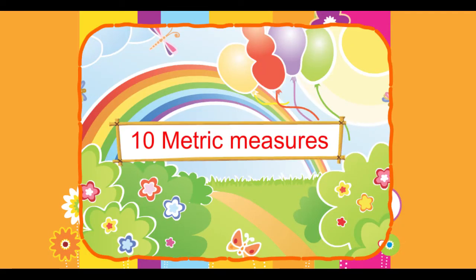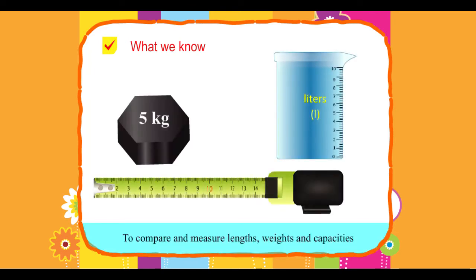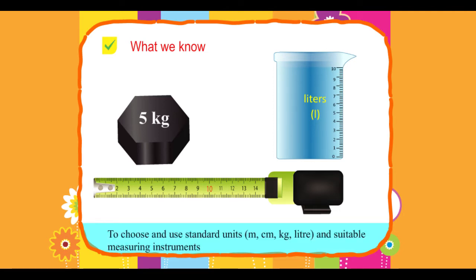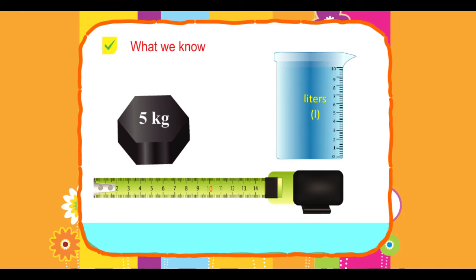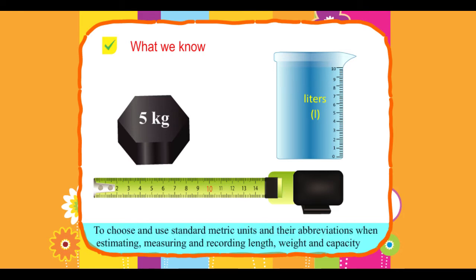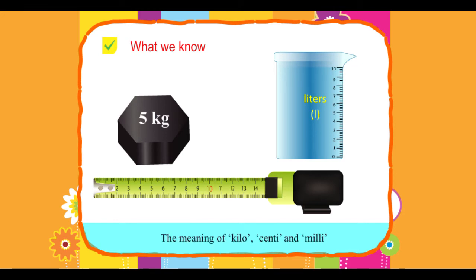Chapter 10: Metric Measures. What we know: To compare and measure lengths, weights and capacities. To choose and use standard units — metre, centimetre, kg, litre — and suitable measuring instruments. To choose and use standard metric units and their abbreviations when estimating, measuring and recording length, weight and capacity. The meaning of kilo, centi and milli.